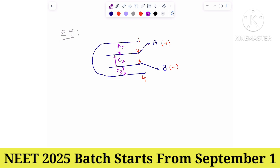Our task is to find effective capacitance across A and B. Mark A and mark B. Point A is joined to the second plate, and point B is joined to the third plate.